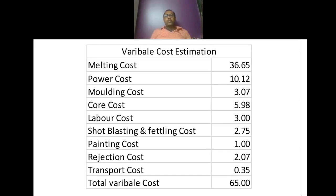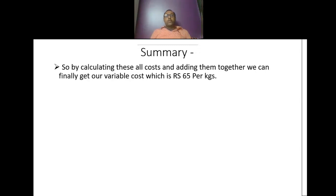This is the variable cost estimation summary: melting cost Rs 36.65, power cost Rs 10.12, molding cost Rs 3.07, core cost Rs 5.98, labour cost Rs 3.00, shot blasting and fettling Rs 2.75, painting cost Rs 1.00, rejection cost Rs 2.07, transport cost Rs 0.35. So the total variable cost comes to approximately Rs 65 per kg of good casting.